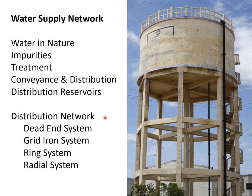Based on the pattern of supply and pipes laid at city level, the water distribution network is categorized into four types: the dead-end system, grid-iron system, ring system, and radial system.